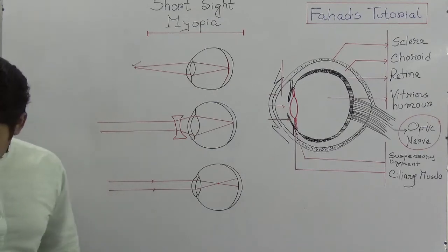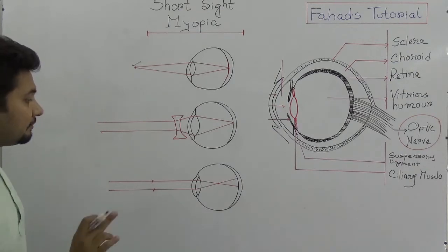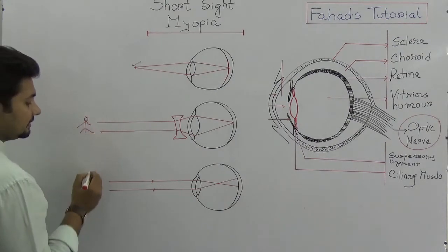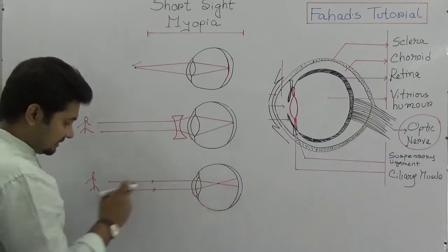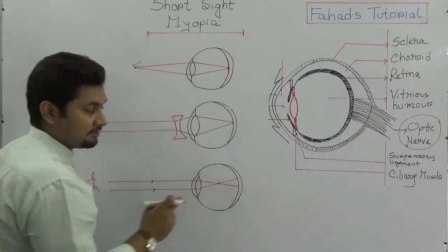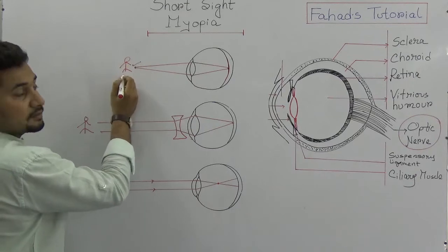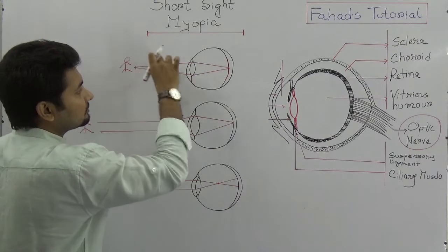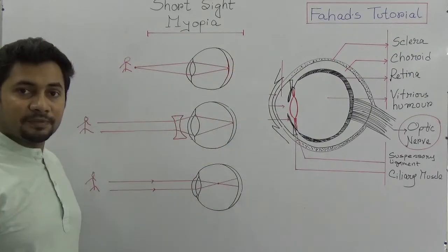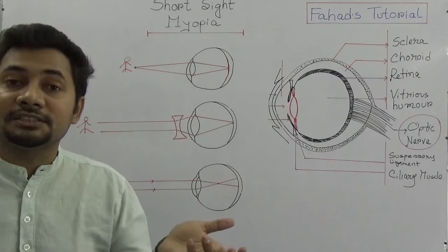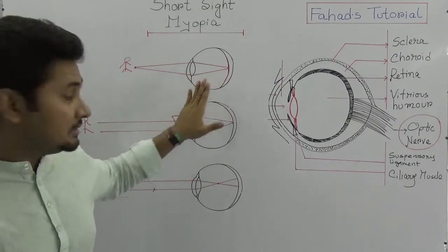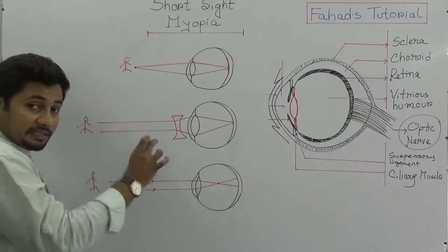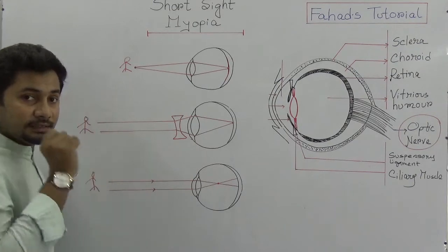To understand this: a person standing far away cannot be seen by the myopic eye because the meeting point is in front of the retina. But when someone is very near, the eye can see them because the light reflected through the lens meets at the retina, causing sensitization. When light comes from far, the eye cannot see — so the remedy is a concave lens.